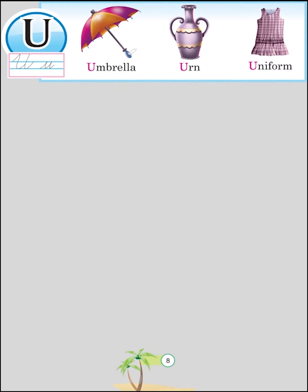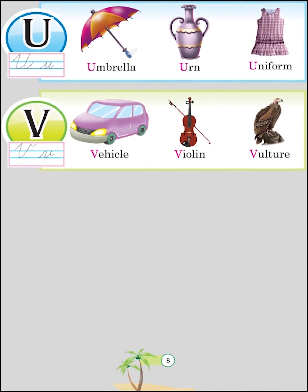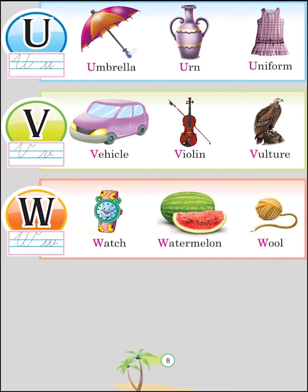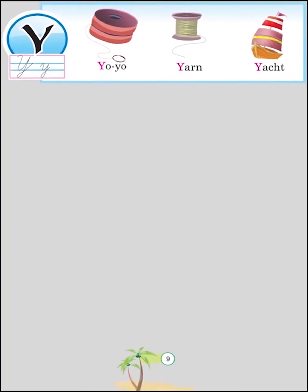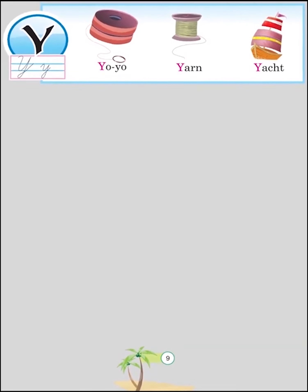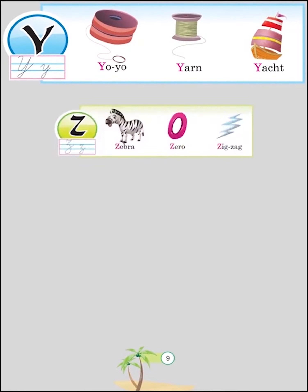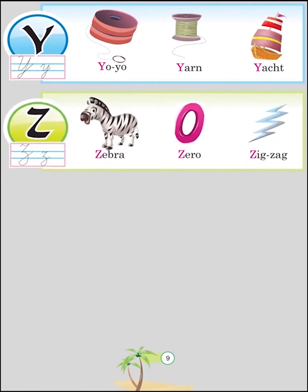S for Sun, S for Sunflower, S for Spider, T for Tiger, T for Telephone, T for Tomato, U for Umbrella, U for Earn, U for Uniform, V for Vehicle, V for Violin, V for Vulture, W for Watch, W for Watermelon, W for Wool, X for Xylophone, X for X-Mas Tree, X for X-Ray.